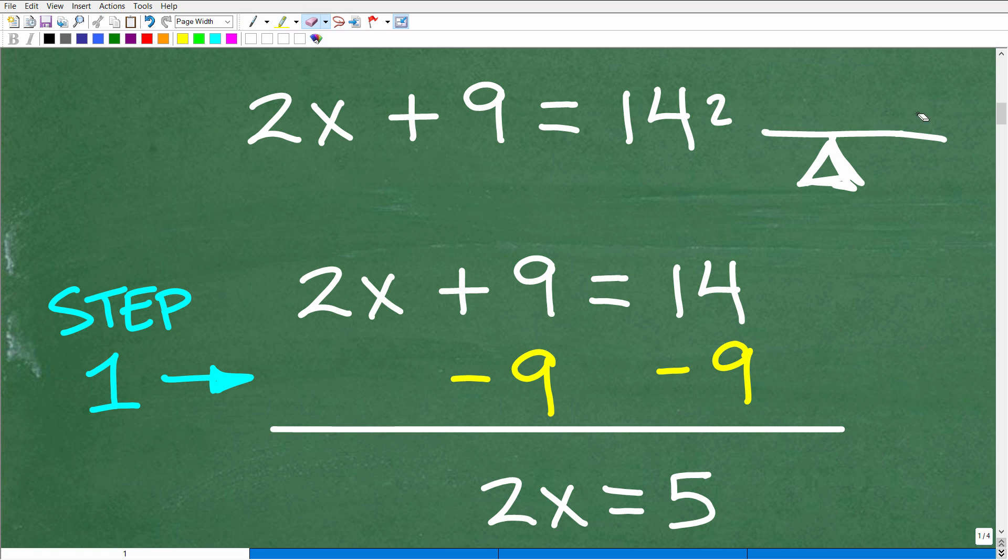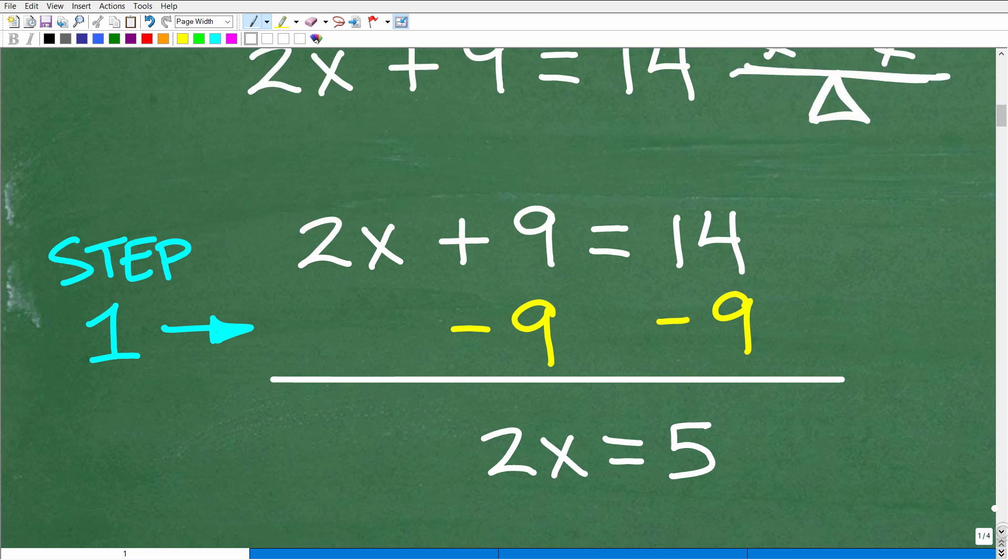But the main idea in algebra when it comes to solving equations, and you've got to really understand this, is here is our fulcrum. Here is our scale. You can do whatever you want on this side as long as you do the exact same thing on this side. You can add weight over here as long as you add the same amount of weight here. You can take weight off over here as long as you take the same amount of weight over here. So this is why you have to do the same thing to both sides of an equation.